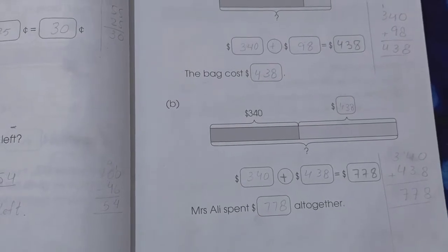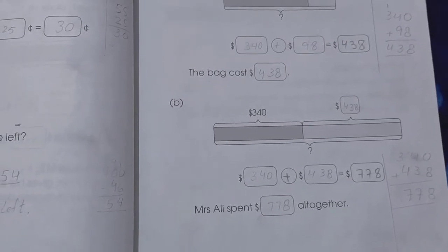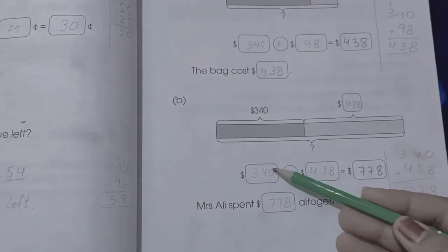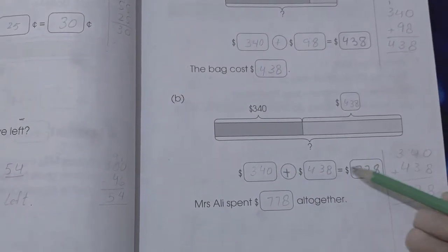Now number b: we have to write the total cost of bag and wallet. So 340 plus 438 is 778 dollars.